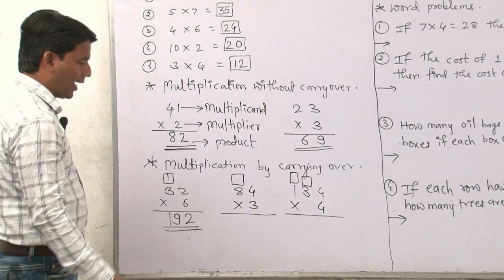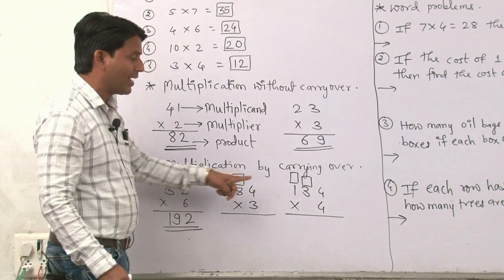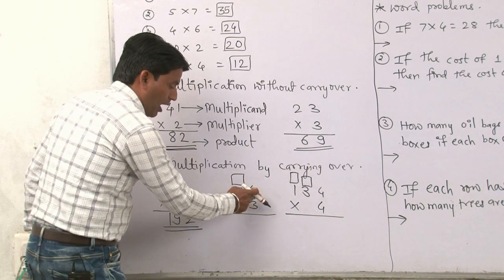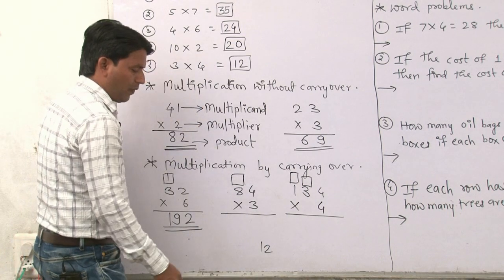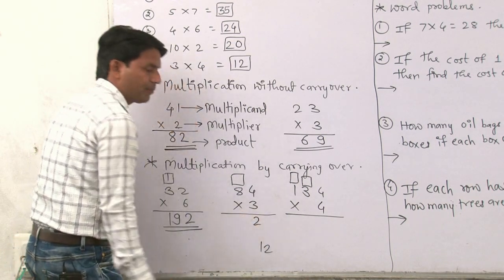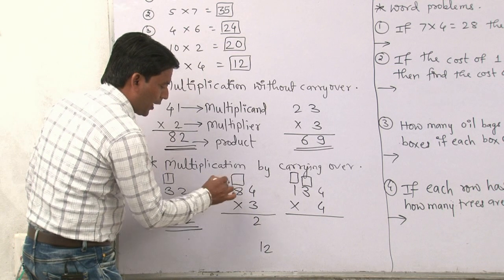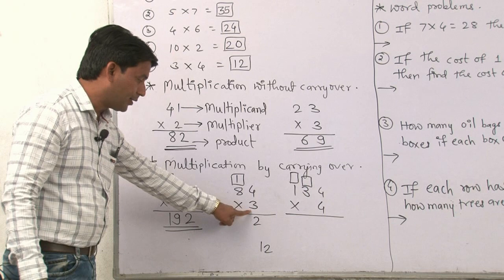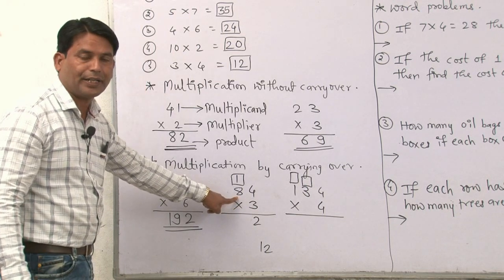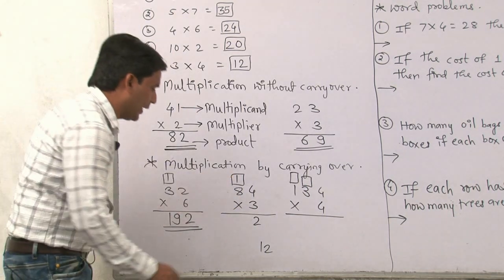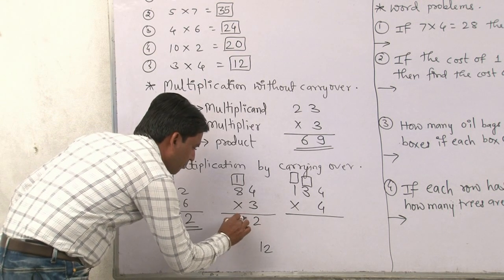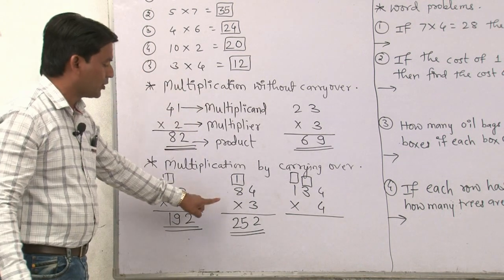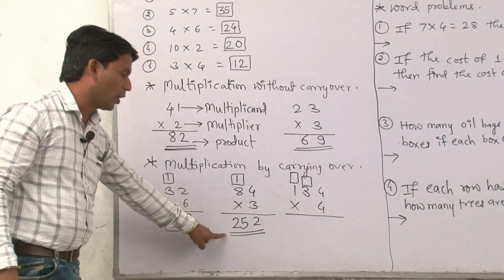Next example: multiplication by carrying over. 3 fours are 12 — write 2 here and carry 1. Then 3 eights are 24, plus 1 is 25. So the product of this multiplication sum is 252.